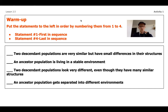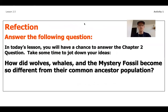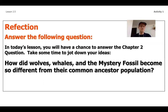Hopefully you got done with that first part of the warm-up. For those of you who are wrapped up, we're going to move on to the second part, which is going to be a little bit of a reflection. I want to push you to not worry too much about whether you were right or wrong, because this is our big chapter two question. The chapter two question we're really trying to solve is: how did wolves, whales, and the mystery fossil become so different from their common ancestor populations?